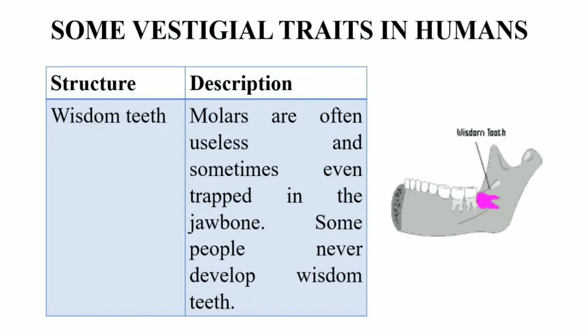Next is wisdom teeth. Wisdom teeth are basically the third molars. With a reduction in human jaw size, these third molars are prone to impaction, meaning they may get trapped in the jawbone. Wisdom teeth are congenitally absent in most babies and are now considered a vestigial feature of humans. Today our diets are not as rough as those of our ancestors, so molars are often useless, and some people never develop wisdom teeth.